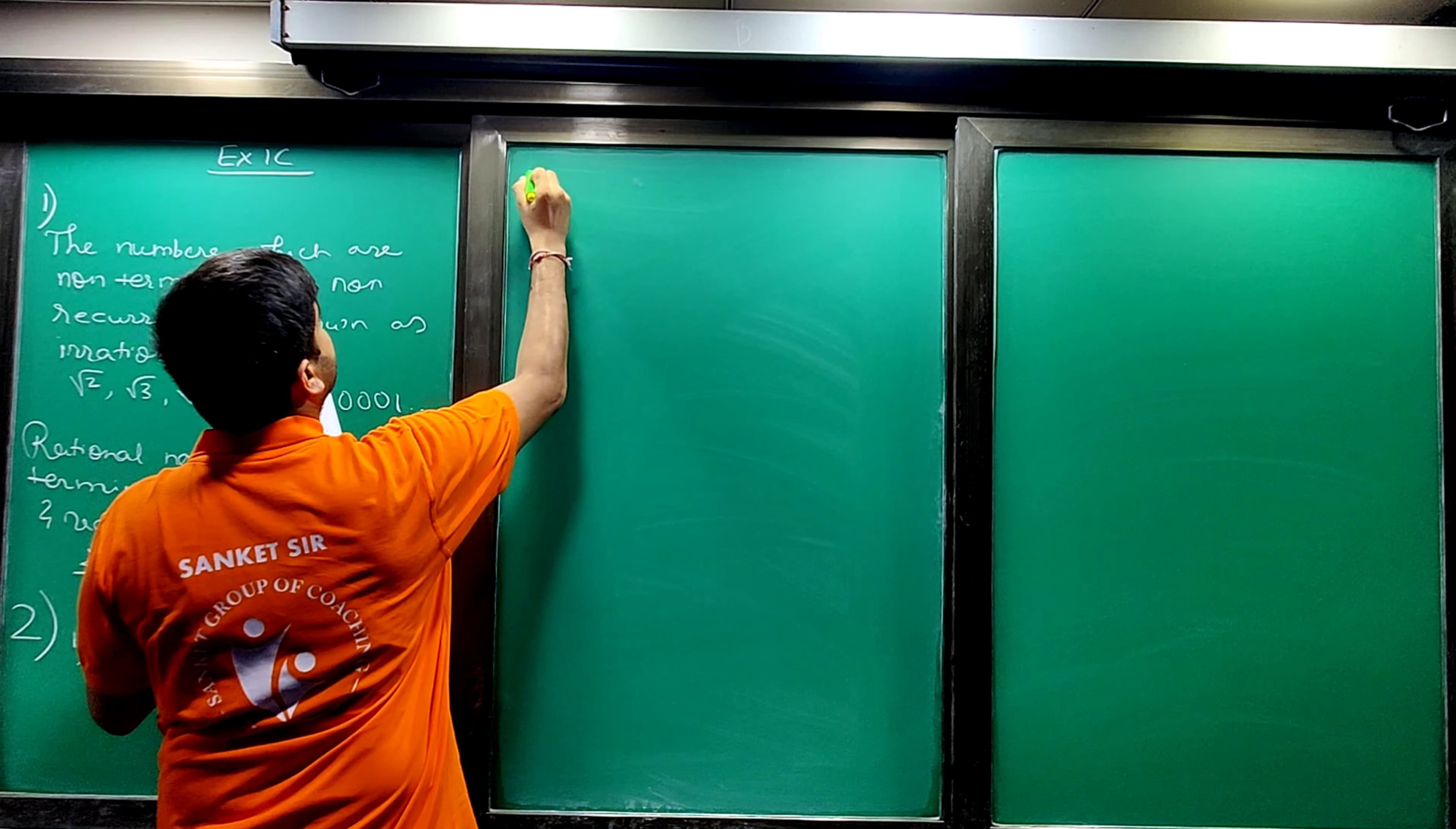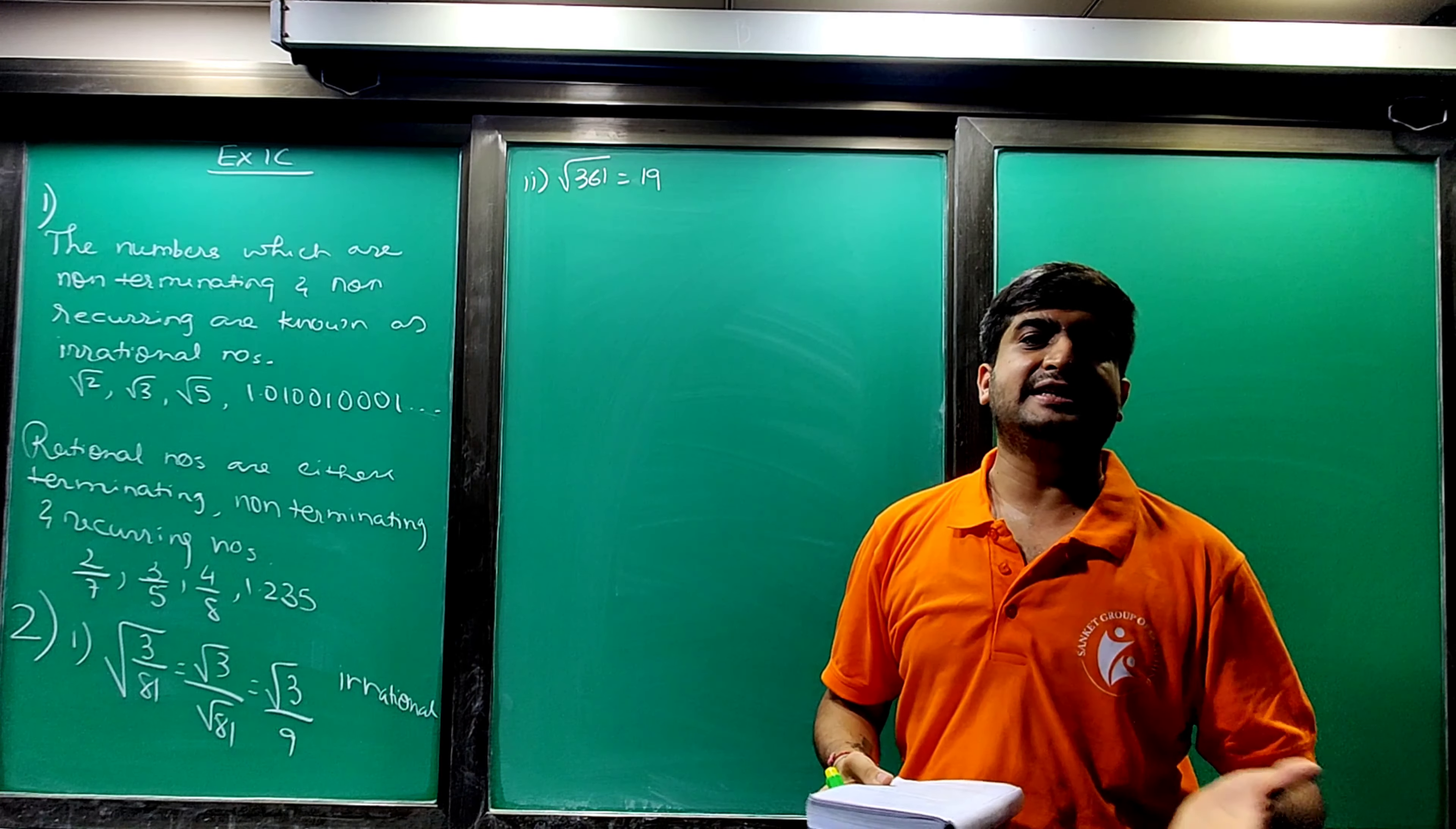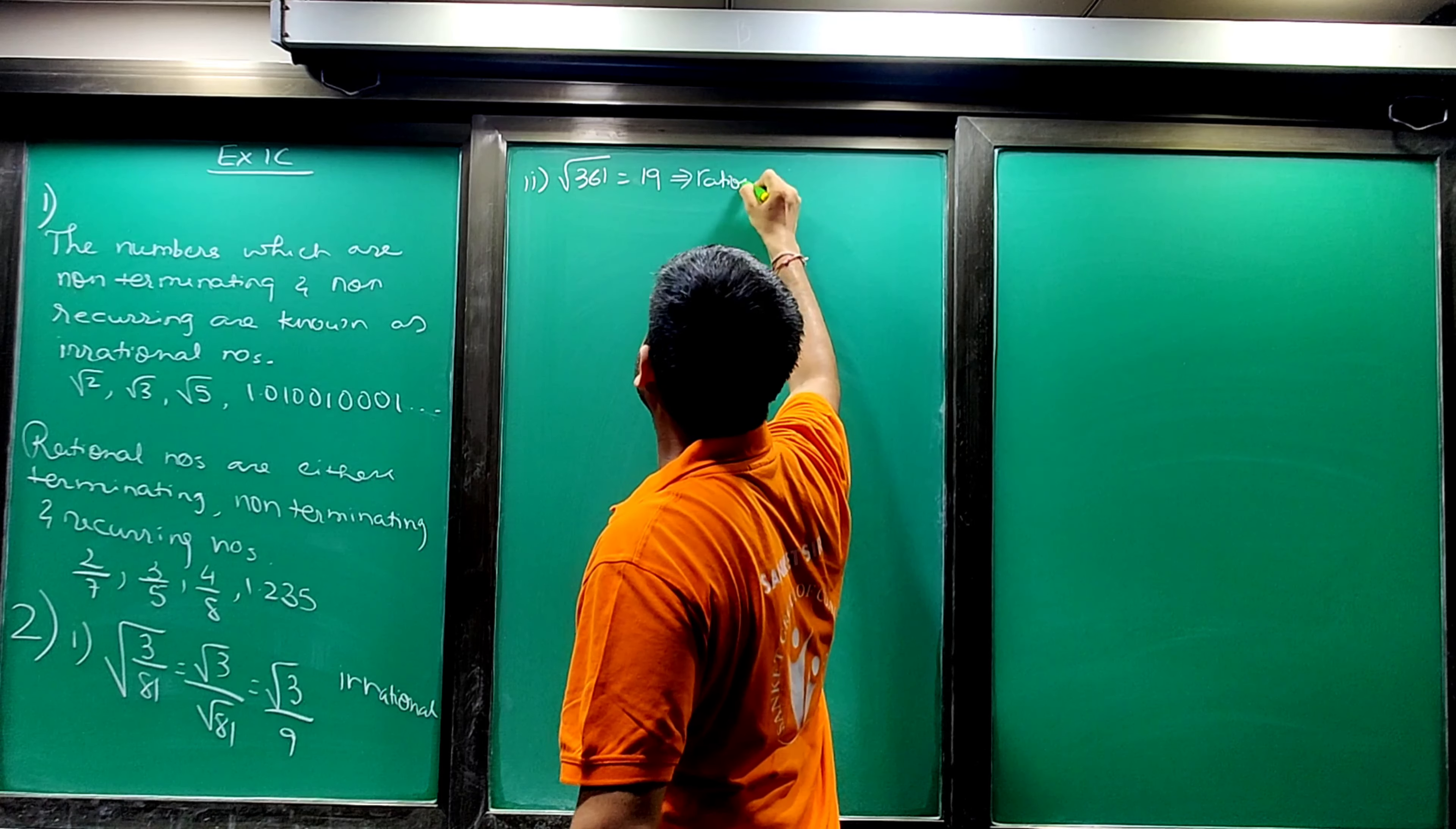Next, second: under root 361, this number is 19, but it's 19 squared. So under root 361 is 19. It is terminating number. As it is terminating number, it is your rational number.